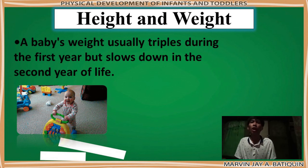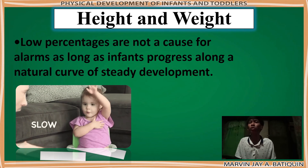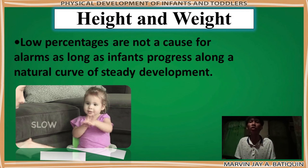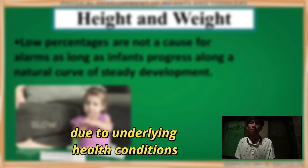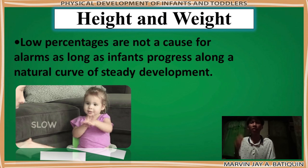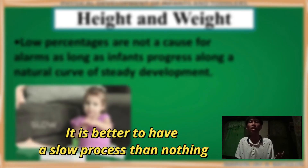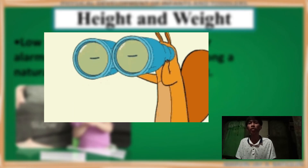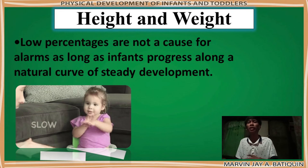Lastly, low percentages are not a cause for alarm as long as infants progress along their natural curve of healthy development. As a parent, it is not necessary to panic when the percentage of the infant's growth becomes low. It is normal because of delays due to underlying health conditions — maybe the hormones are not fully active. It is better to have a slow process than nothing. Furthermore, parents should be aware of their children's growth. If there is a problem, observe first. But if it is very obvious that the child did not grow properly, that is the time to take action.